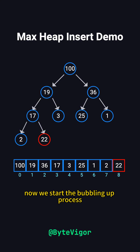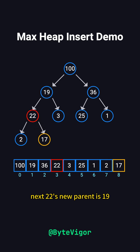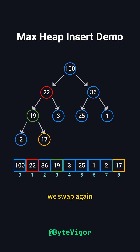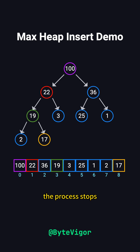Now we start the bubbling up process. 22's parent is 17, and since 22 is larger, we swap them. Next, 22's new parent is 19, and since 22 is still larger, we swap again. Finally, 22's new parent is 100, and since 100 is larger, the process stops and the heap property is preserved.